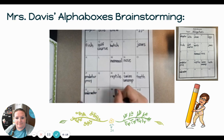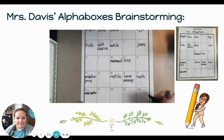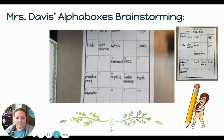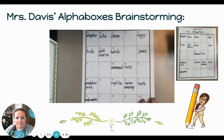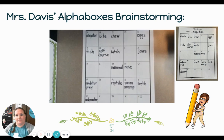W — water. I'm going to leave my alpha boxes there for now. I noticed Ms. Davis didn't think of words for every letter, but wow, I really got my brain going and thinking about those background knowledge words that I already have about alligators.